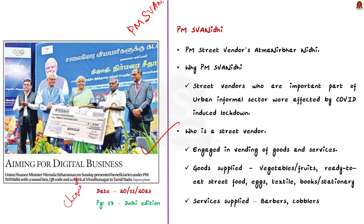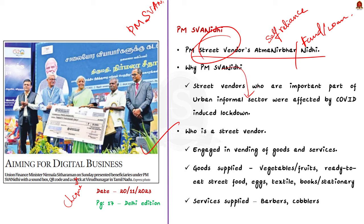The scheme is aimed at street vendors, who represent an important part of the urban informal economy and play a significant role in ensuring availability of goods and services at affordable rates to city dwellers. During the COVID-19 pandemic and associated lockdowns, the livelihood of street vendors was adversely affected — they were cash-strapped. To revive their businesses, street vendors needed credit, and to address this need, the scheme was introduced in June 2020 during the lockdown period.